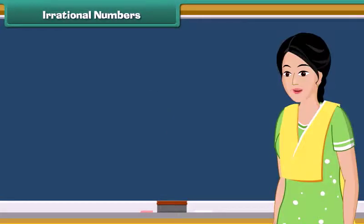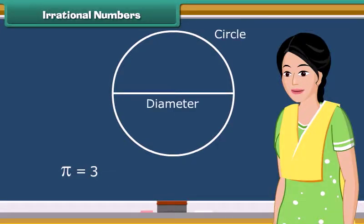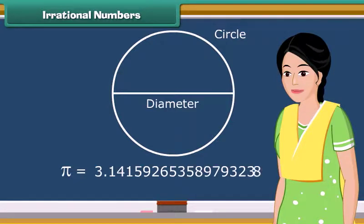Some decimals called irrational numbers don't end or repeat. A good example is pi, which is the ratio of circumference of the circle to its diameter. It begins with the number 3.14159 and keeps going on with no particular pattern into infinity.